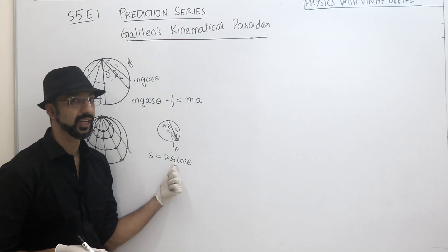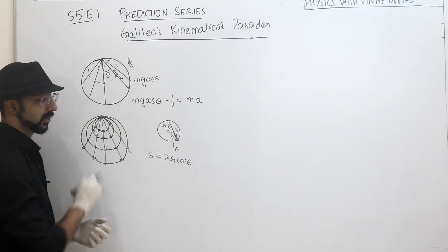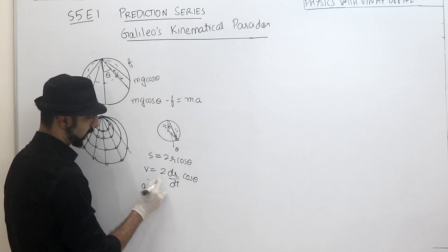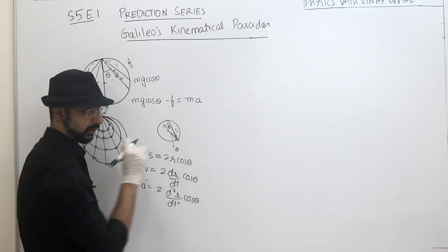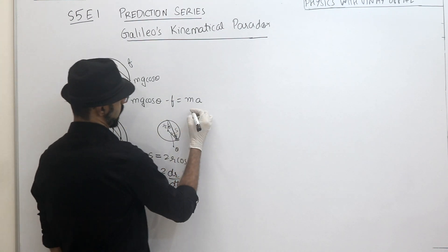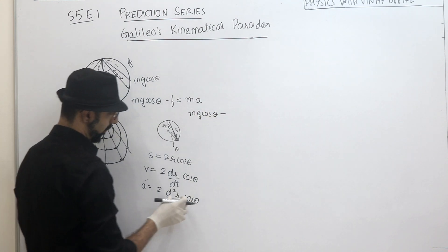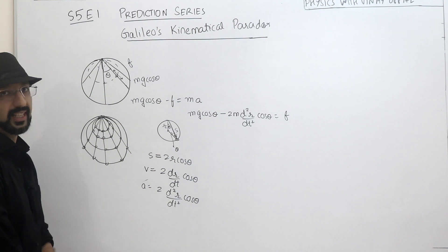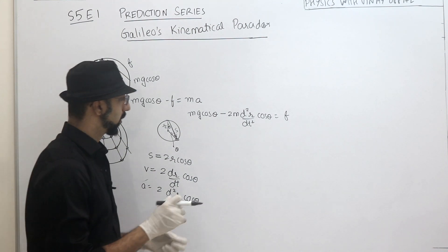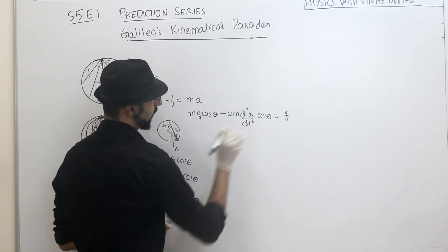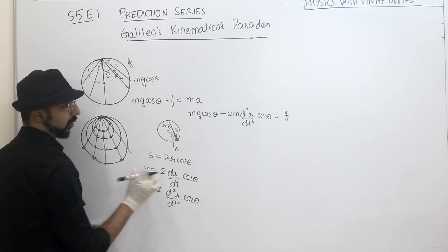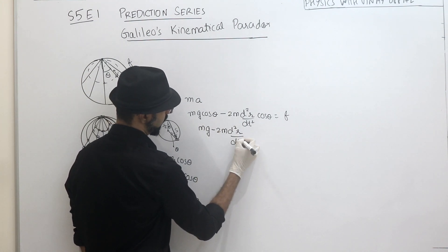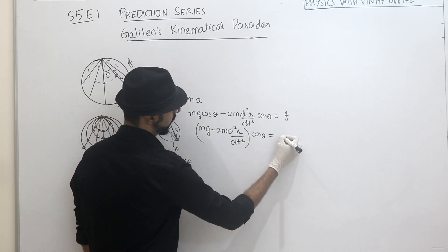As the bead travels down, R is going to change because the bead will keep lying on circles of increasing radius. So substituting this acceleration into the force equation: Mg cos θ minus F should equal MA. This gives us: Mg minus 2M (d²R/dt²) multiplied by cos θ should equal F(V), where F is a function of velocity and velocity itself is 2 (dR/dt) cos θ.